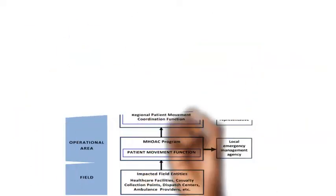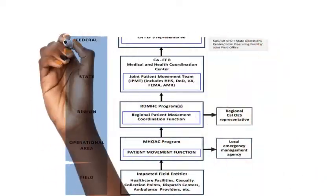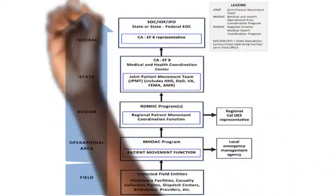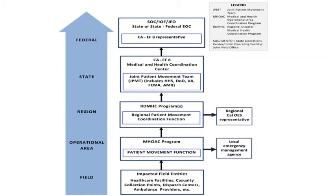Requests always follow SIMS. At the field level, impacted health facilities submit requests into the MHOAC program, which elevates them to the region; the region elevates to the state if needed; and the state then works with the federal government to ensure all medical and health needs are met.